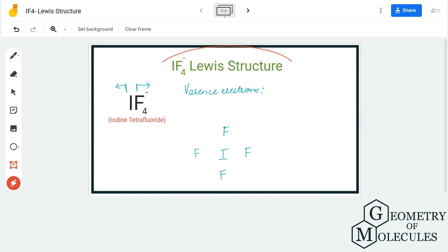Hi guys, today in this video we are going to determine the Lewis structure for IF4-. It is also known as iodine fluoride ion because it has a negative charge over here; this is an ion.